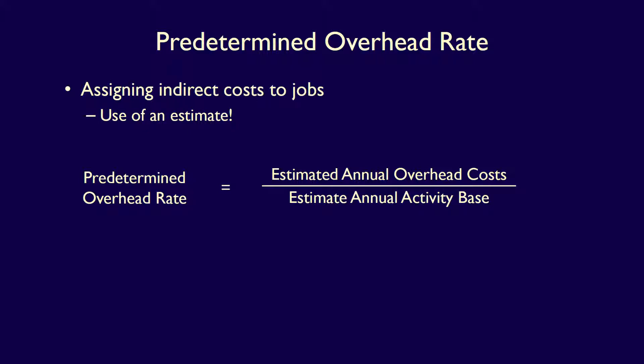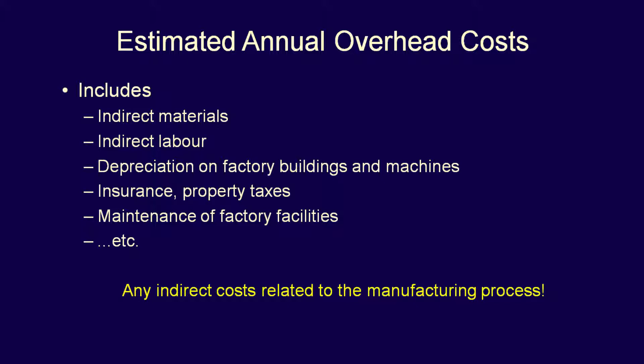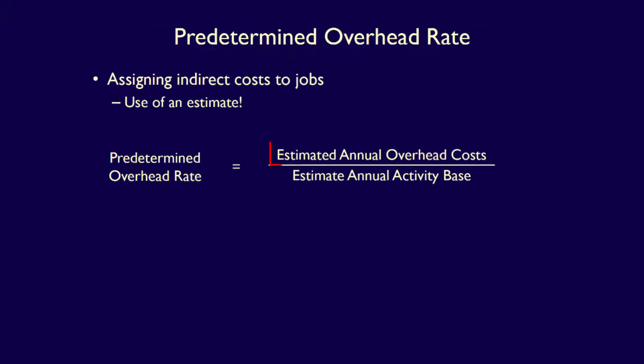This rate is calculated by taking an estimate of all overhead costs for the year and dividing it by the estimated annual activity. Manufacturing overhead is made up of all the manufacturing costs which are indirectly associated with producing products — indirect material, indirect labor, depreciation, insurance, property taxes, and more. The estimate of all overhead costs for the year is based on actuals from the previous year and what we expect going forward. We use that as the numerator in the calculation of the predetermined overhead rate.